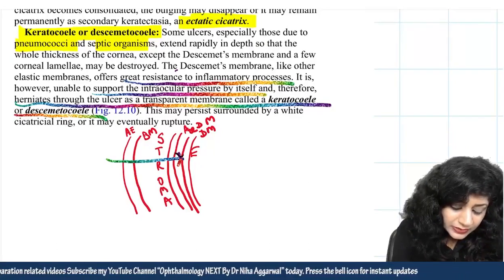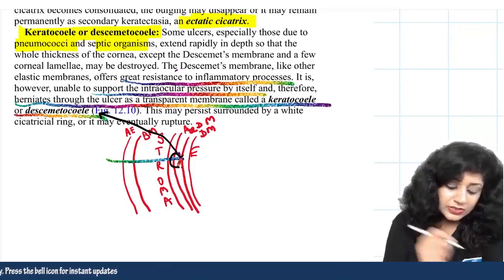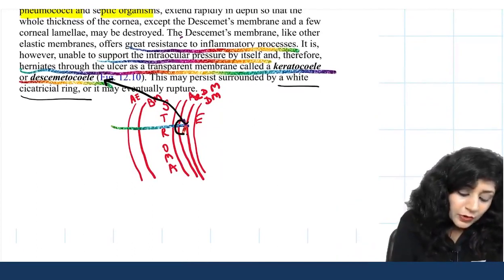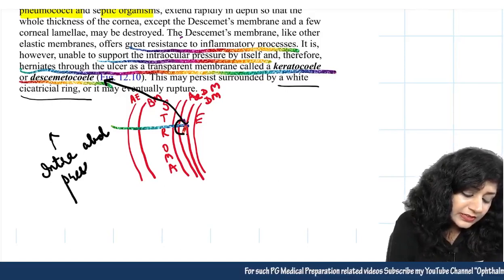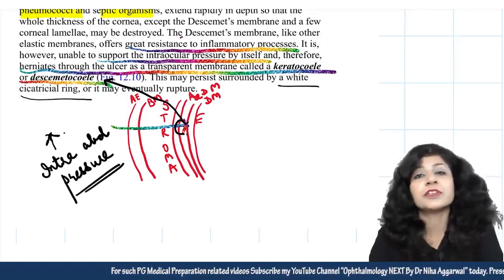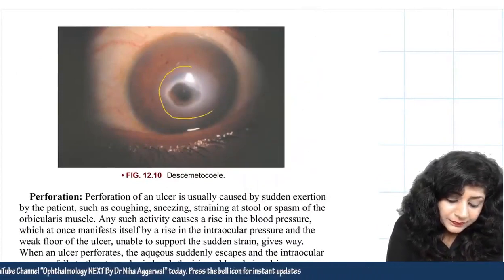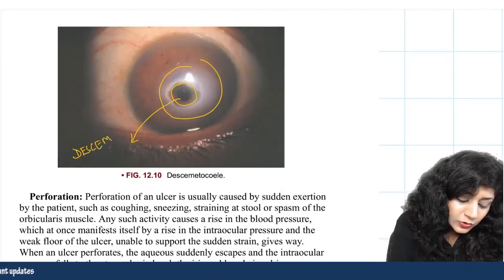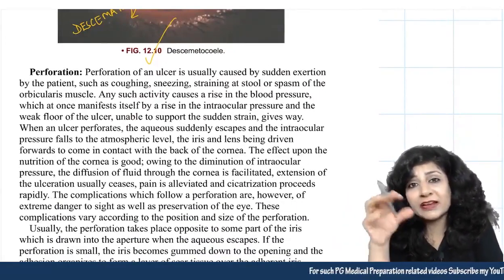As the ulcer penetrates through the stroma, Descemet's membrane herniates outward, forming a desmetocele or keratocele. This represents impending perforation. It may persist surrounded by a white cicatricial ring. If anything increases intraocular pressure, frank perforation can result. An image shows the transparent desmetocele surrounded by a whitish area.